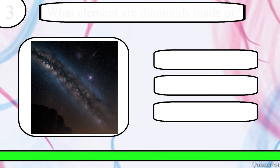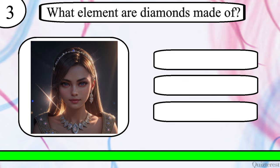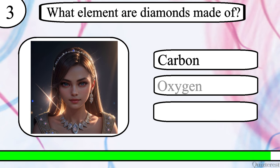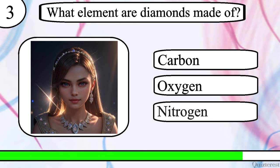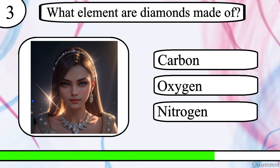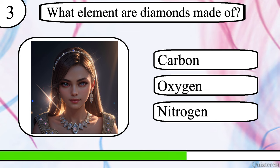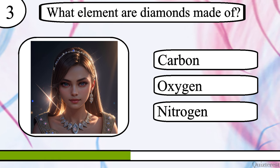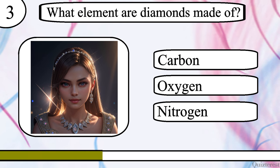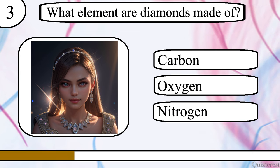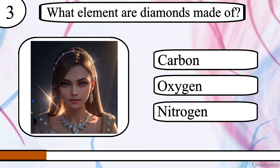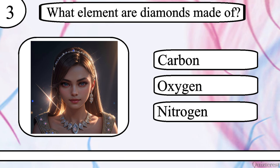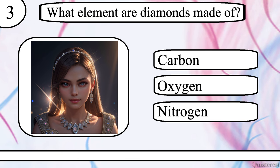Question 3. What element are diamonds made of? Carbon, oxygen or nitrogen? The correct answer is carbon.